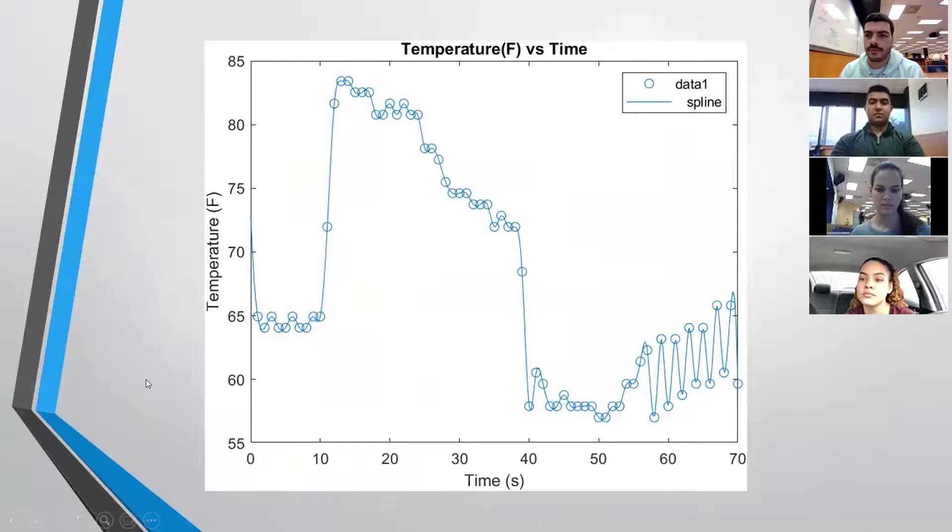This is our graph for task two. As you can see, we were required to record three variations of temperature, and that's what we did. First, you can see the room temperature around, again, 64 degrees Fahrenheit.